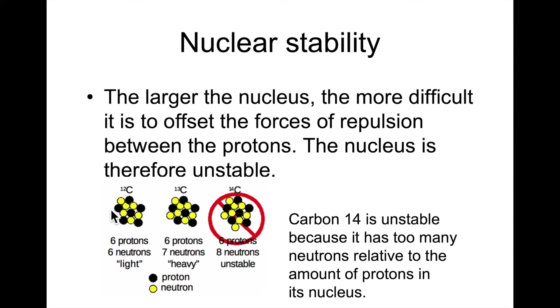You have an example here with carbon. Carbon has always six protons, but can have six neutrons or seven neutrons or eight neutrons. These are isotopes of carbon because they have a different mass due to a different amount of neutrons.